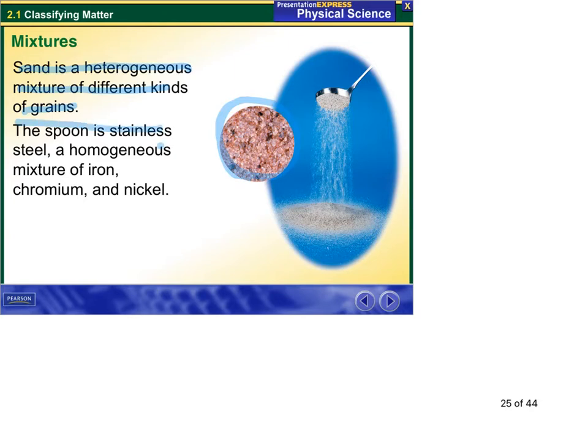The spoon, stainless steel, a homogeneous mixture of iron, chromium, and nickel. So spoon, everything in it looks the same. It almost looks like a pure substance, but it's still a mixture.